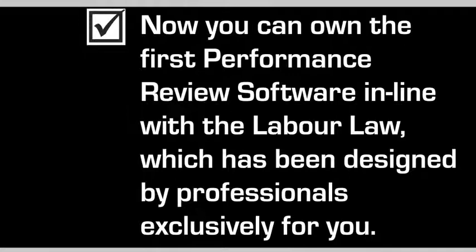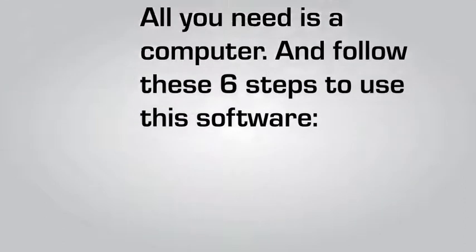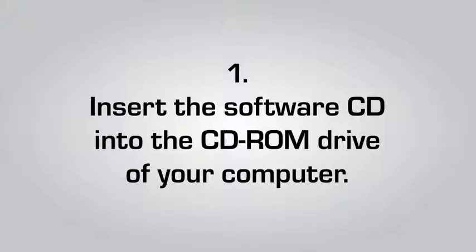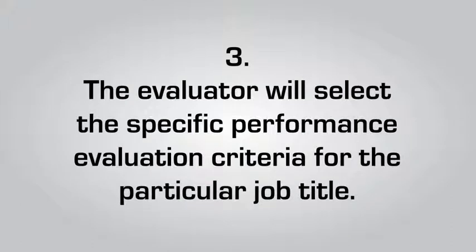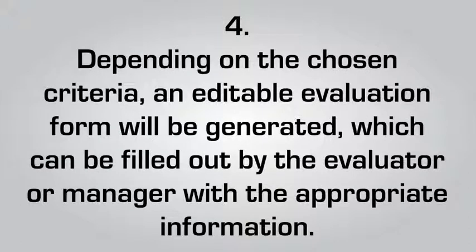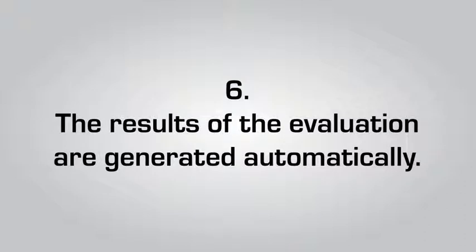Now you can own the first performance review software in line with the Labour Law, designed by professionals exclusively for you. All you need is a computer and these 6 steps: insert the software CD and select the field of activity; the evaluator selects the specific performance evaluation criteria for the job title; an editable evaluation form is generated and filled out by the evaluator or manager; the evaluation forms are then sent to the employee and direct manager, both required to fill it out; and the results are generated automatically.